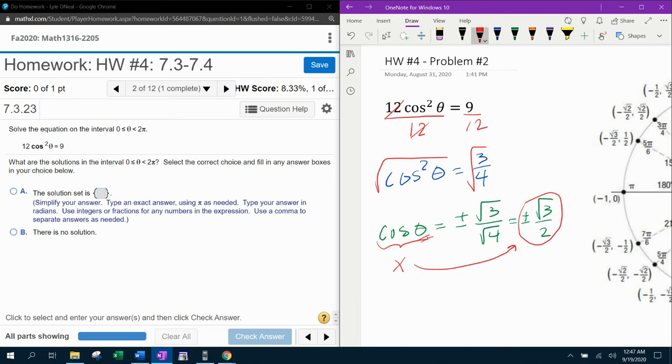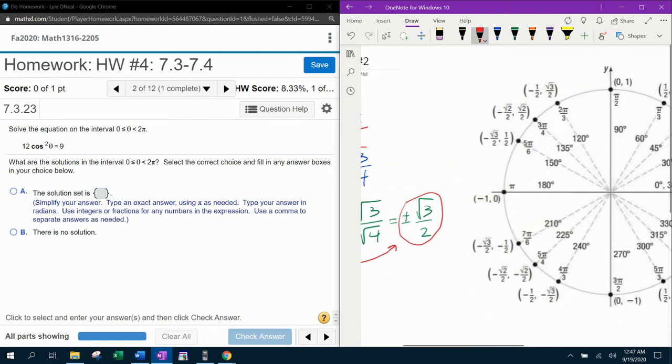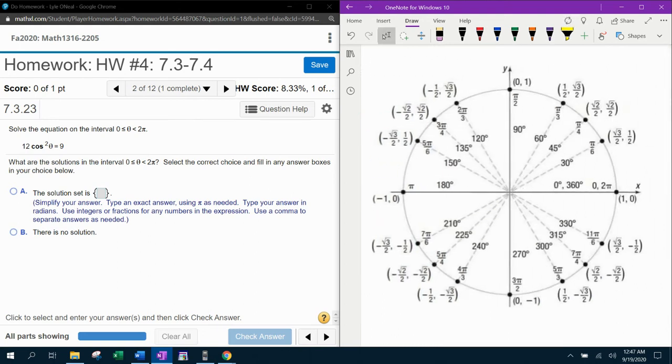Again, we're looking for the x coordinate because it's cosine. Cosine of theta in the unit circle is x, and we are concerned with the positive and the negative values because we took the square root of both sides. So here we go to the unit circle, positive square root of three over two or negative square root of three over two.